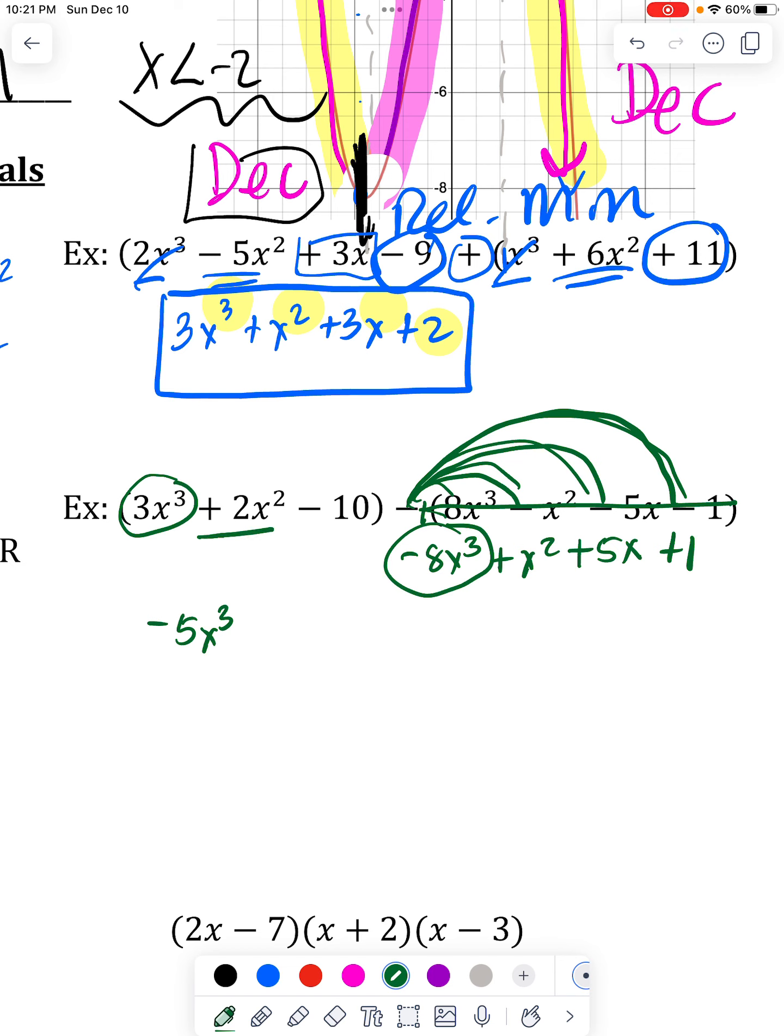Then I have a 2x² plus a 1x². So 3x². Then I look to see if there's a plain x. And there is one over here. There just wasn't one in the front.